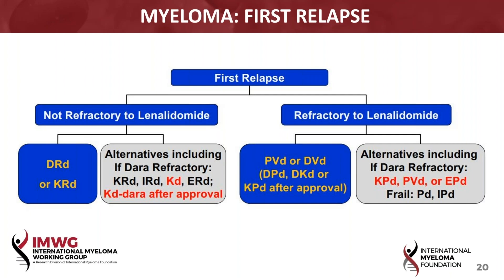For patients who are refractory to lenalidomide, there are pomalidomide options, daratumumab proteasome inhibitor options, and then options for patients who are more frail. Rafat, would you like to comment first on how you approach or what are your preferred choices for the refractory and not refractory patients?